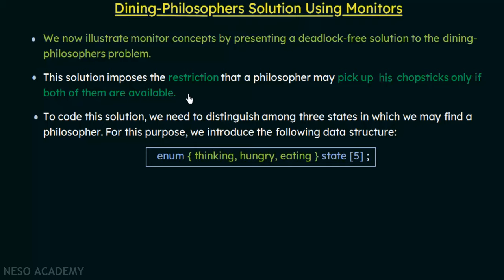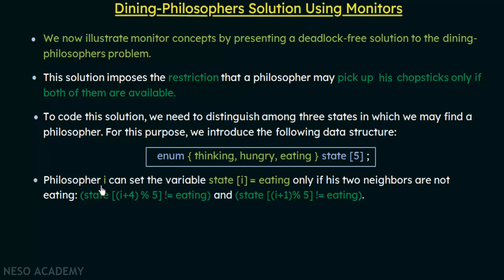To code this we use a data structure: a variable called state which is an array of size 5, since we have five philosophers. So state[0] through state[4] represent the respective state of each philosopher. A philosopher i can set state[i] equal to eating only if his two neighbors are not eating.